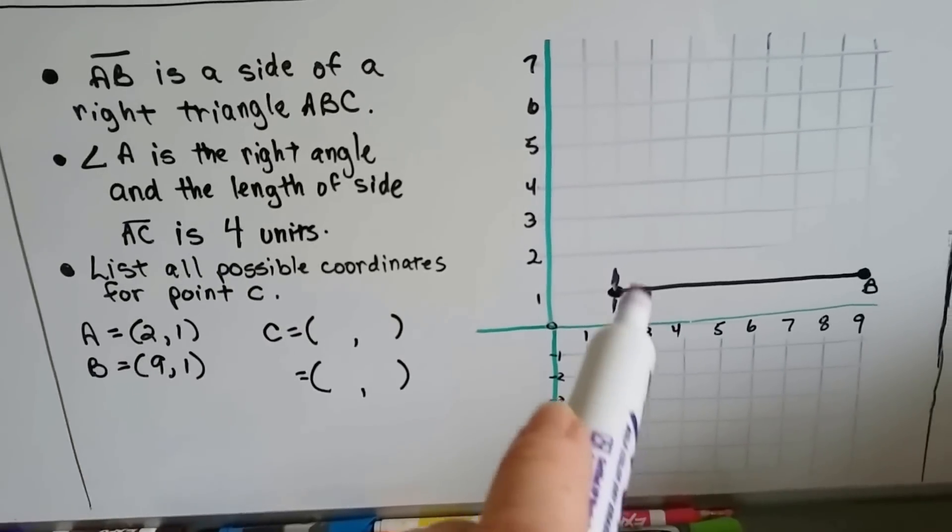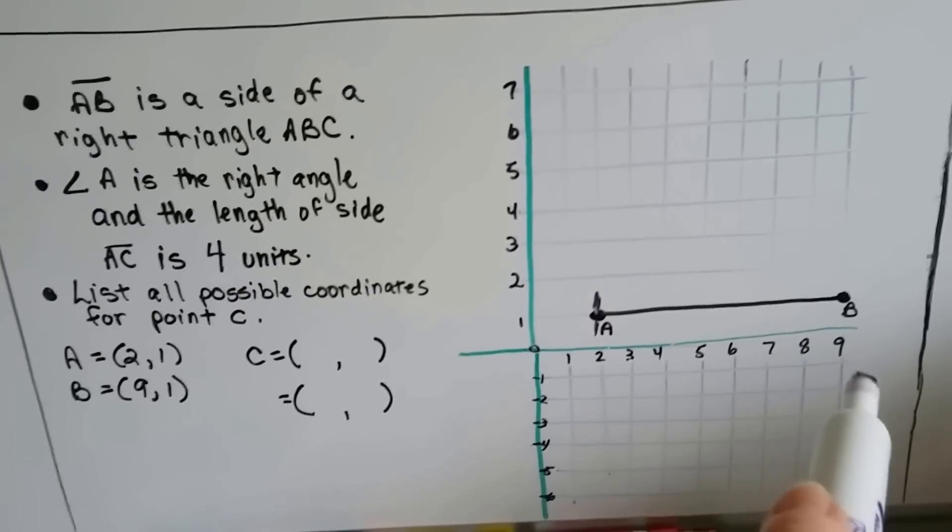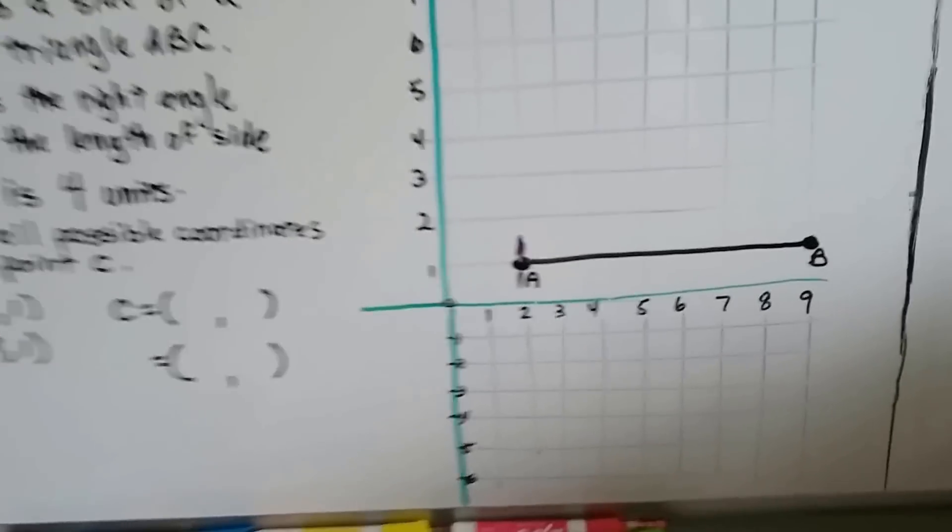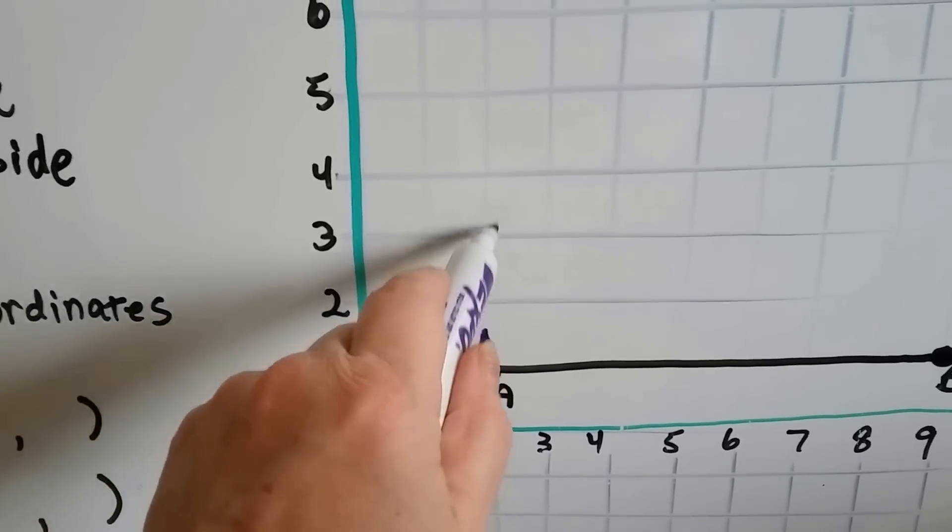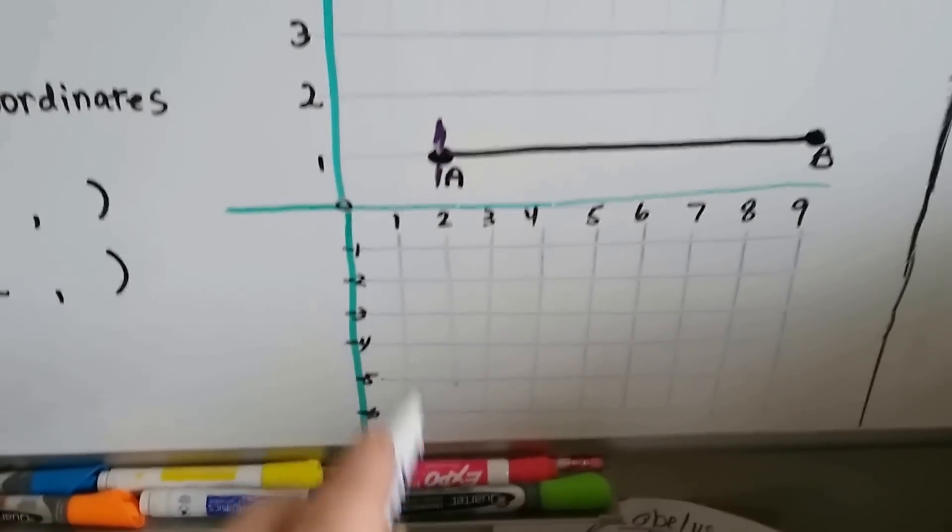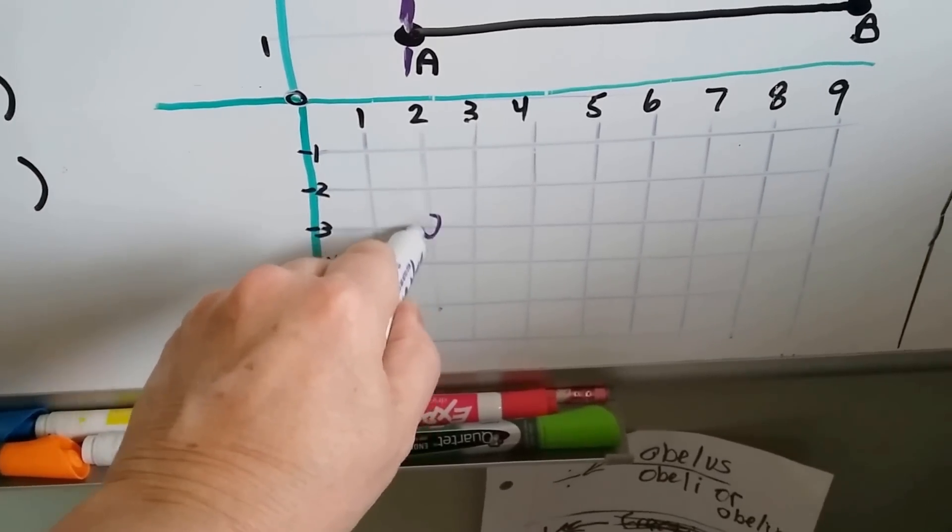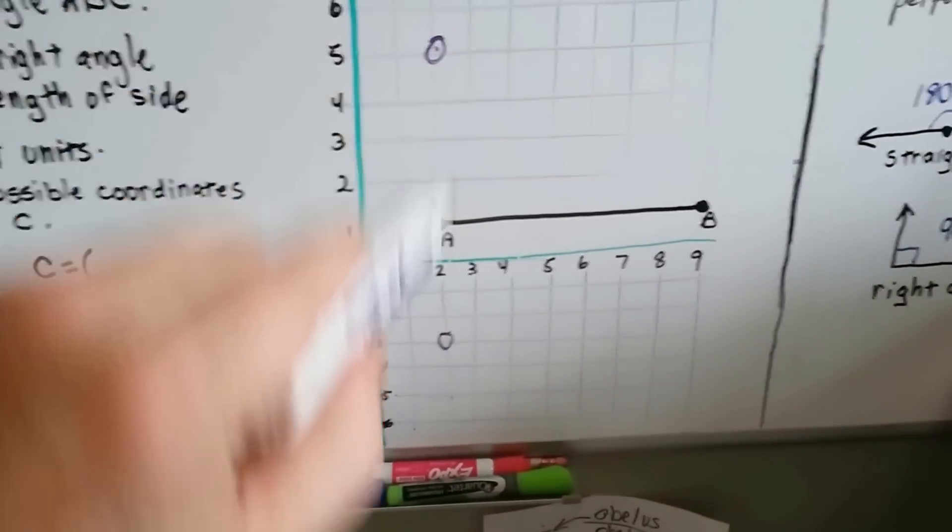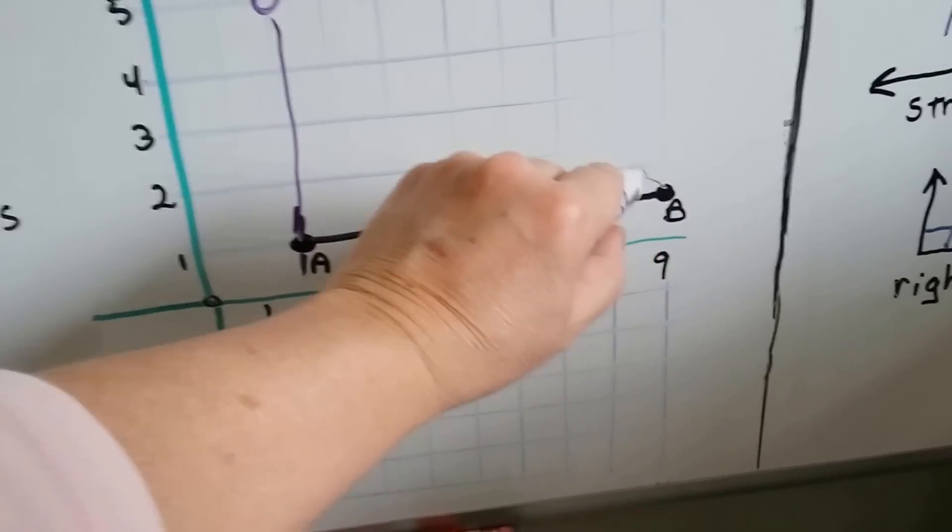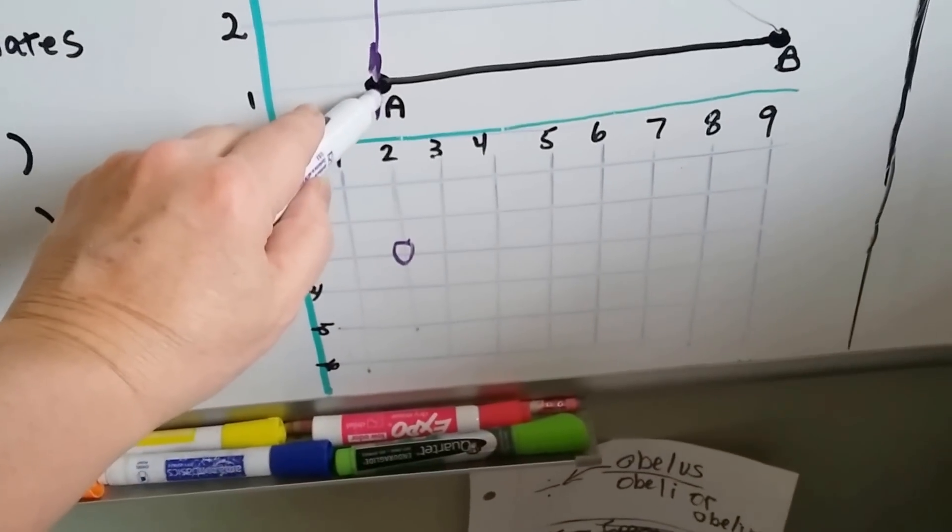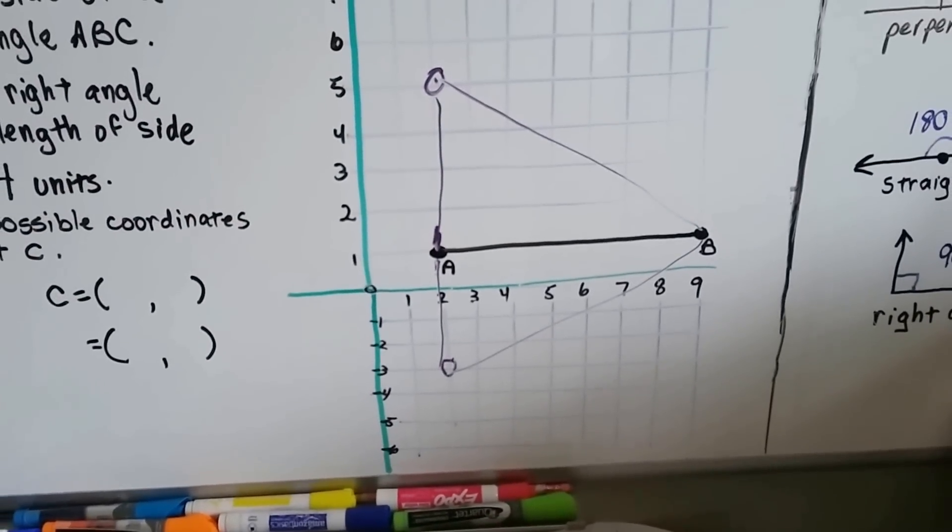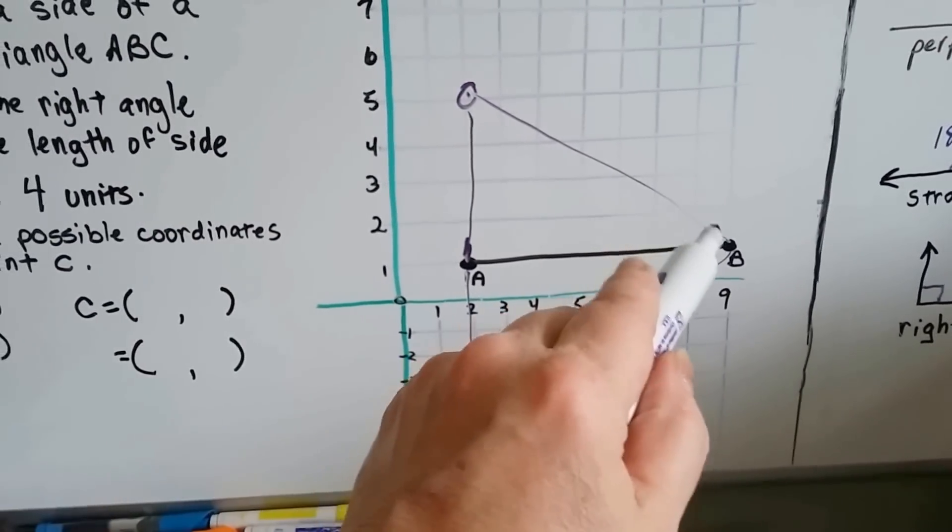Well, point A is 2 comma 1. B is 9 comma 1. If point C is 4 units away, and this is a right angle, then it could possibly be 1, 2, 3, 4. It could be here. But it could also go down. 1, 2, 3, 4. It could also be here. And either way, we would have a right angle. If it was this way, then our triangle would look like that. If it was down, then our triangle would be drawn like that. It can't move on to this side because we need angle B and that's set.